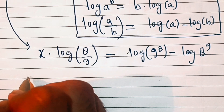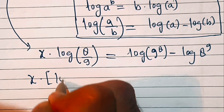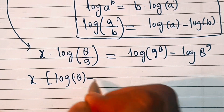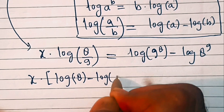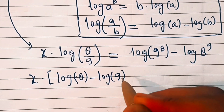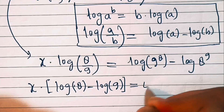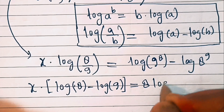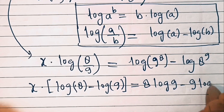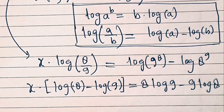This can be further written as x times (log 8 minus log 9) equals 8 times log 9 minus 9 times log 8, by applying these two logarithm laws.